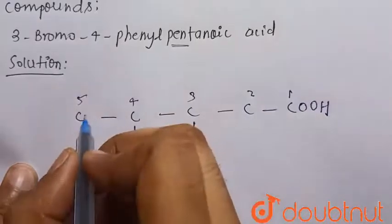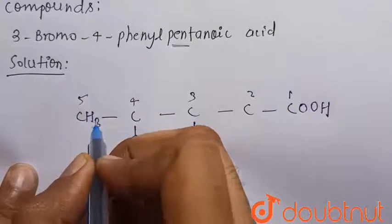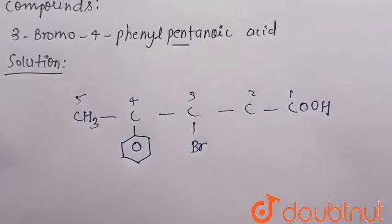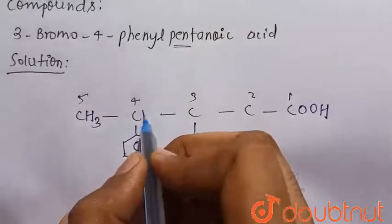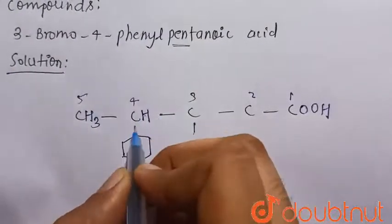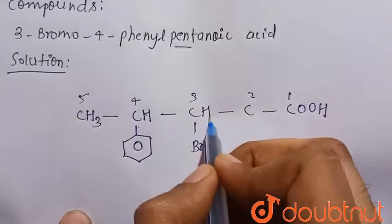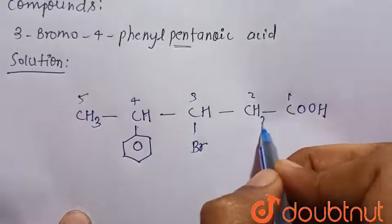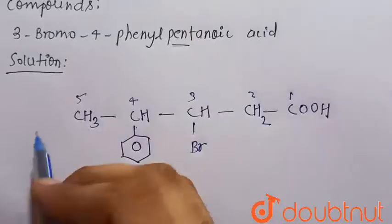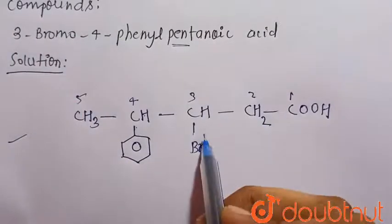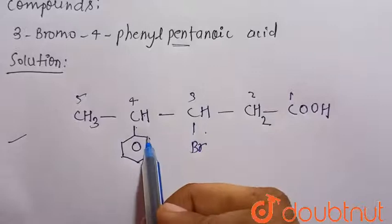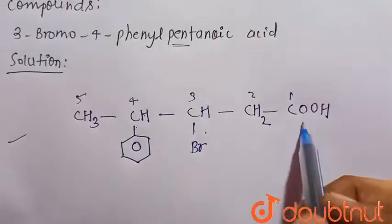Now we have to balance the valency of each carbon, because carbon has a valency of 4. So carbon 5 becomes CH3, carbon 4 becomes CH, and we add the appropriate hydrogens at each position. There will also be H and CH2 groups to complete the structure.